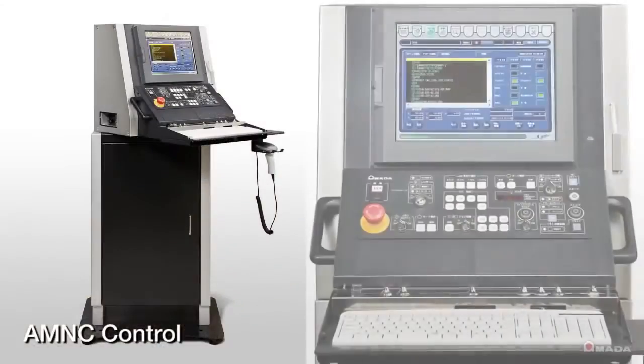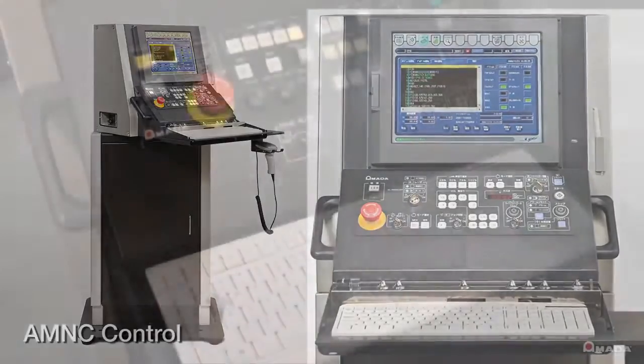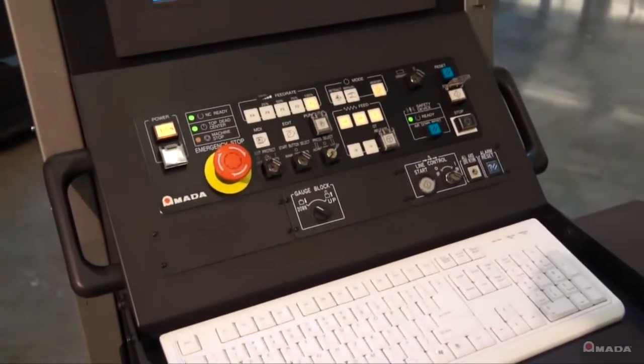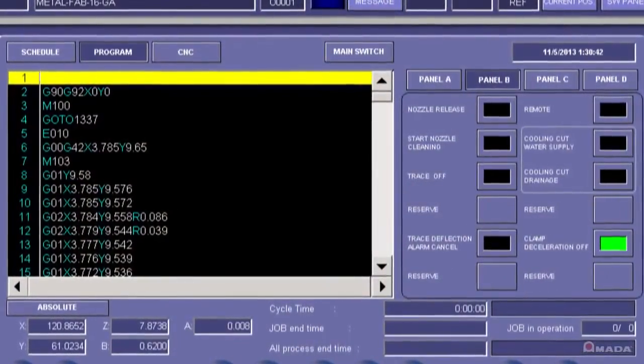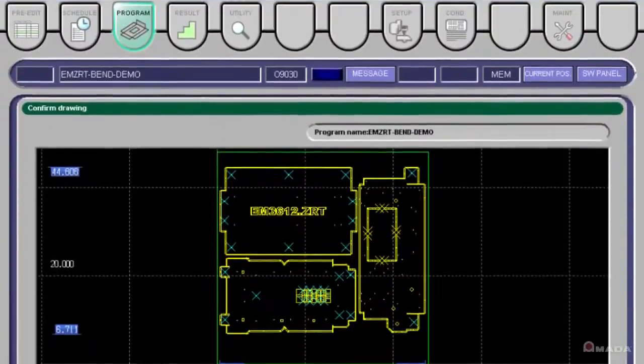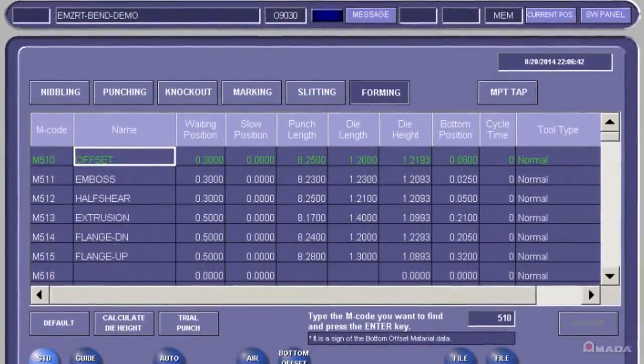The AMNC control is equipped with many features that allow operators to easily operate and maintain the machine. It's a Windows-based system that can retrieve programs from your company's network. All of the information that the operator needs to see is displayed on the user-friendly interface.